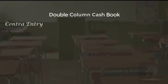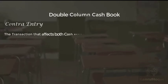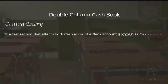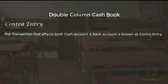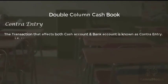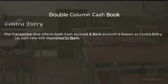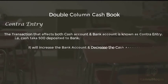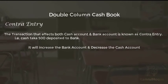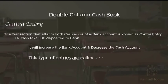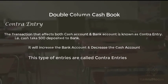Contra entry: a transaction that affects both the cash account and the bank account is known as a contra entry. For example, cash of $500 deposited to the bank — this will increase the bank account and decrease the cash account. This type of transaction is called a contra entry.